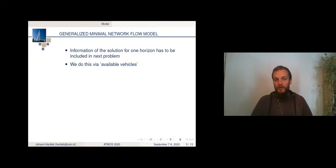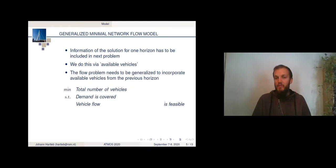To do that, we need to adjust the model a little bit. So in particular, we need to share information from the solution of one horizon with a problem instance of the next horizon. And we do this via available vehicles. So we basically remember from the solution of one horizon where the vehicles end at the end of the horizon and put this in as an input to the flow problem and incorporate it in such a way.